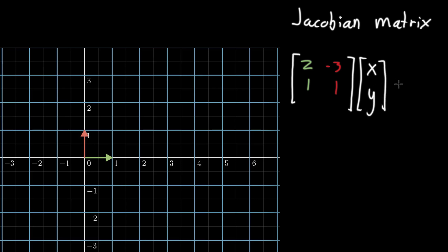This is going to give us a new two-dimensional vector. This is going to bring us to, in this case, 2x plus (-3)y and 1x plus 1y. This is a new two-dimensional vector somewhere else in space.